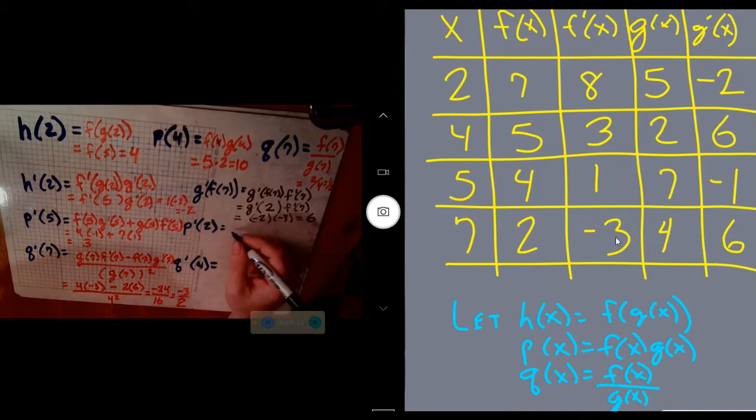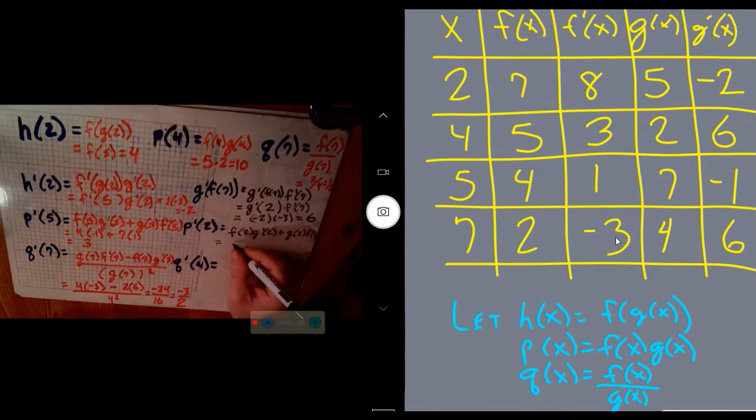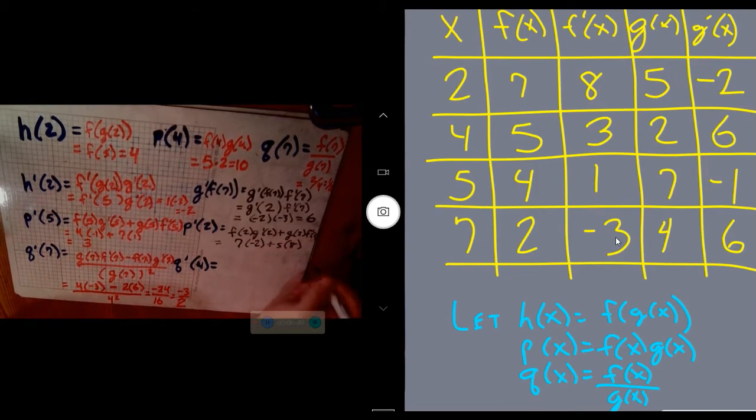All right, let's see how you did. So p', again, should be the first times the derivative of the second plus the second times the derivative of the first. 1d2 plus 2d1. Using the table: f(2) is 7, g'(2) is -2, g(2) is 5, and f'(2) is 8. So we get -14 plus 40. I should get 26 as my answer on that problem.